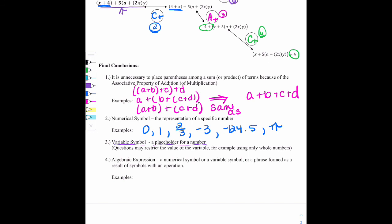And then in number four, we have a reminder of what the definition of an algebraic expression is. It is a numerical symbol or a variable symbol or a phrase formed as a result of symbols with an operation. So we can have lots of different algebraic expressions. 2x would be an example. You've got the product of a number and a variable. a-2 would be an example of an expression. You could have 24÷t, so division as an expression. And then you can have something, let's use some exponents here, 2x²-4. That counts as an expression. The big takeaway with expressions is remember they're not equations because they do not have an equal sign. And that concludes our lesson on the commutative and associative properties day two.